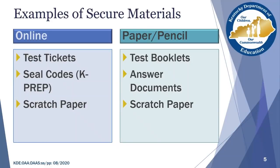Secure test materials will vary slightly by assessment, but let's look at our most prevalent test, KPREP, to better understand what secure materials are. For online testing, you will see test tickets and seal codes created from the Pearson Access Next or PAN system for test kits, which are used by students to test. Once these items are printed, you must keep them secure until they are distributed on the test day. After the test tickets and seal codes have been used, they will be returned to the BAC to be securely destroyed.